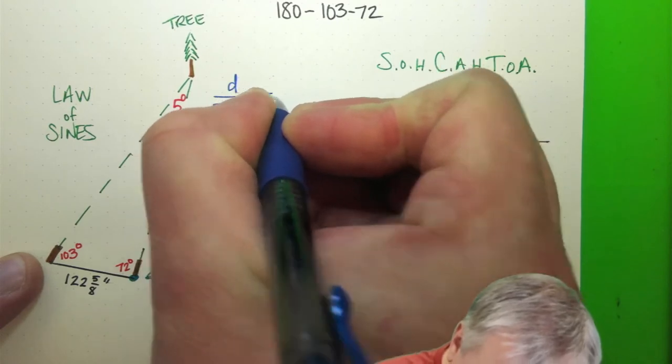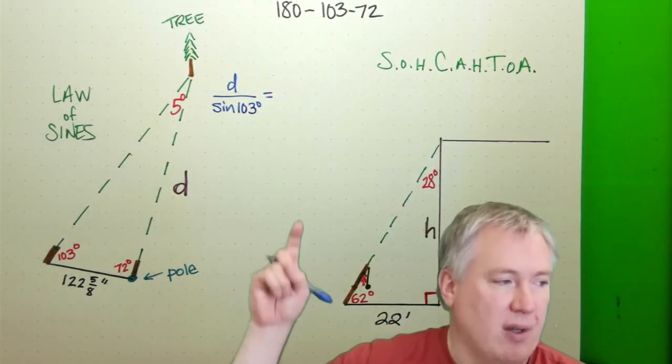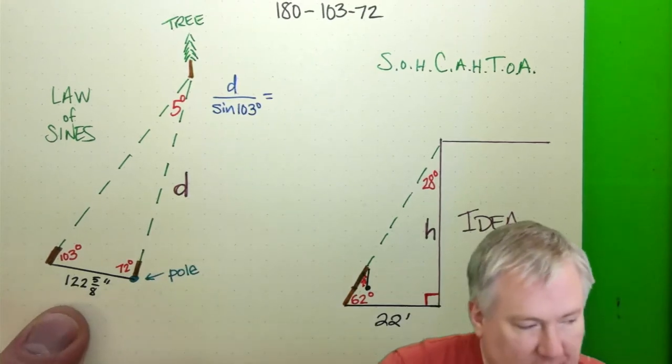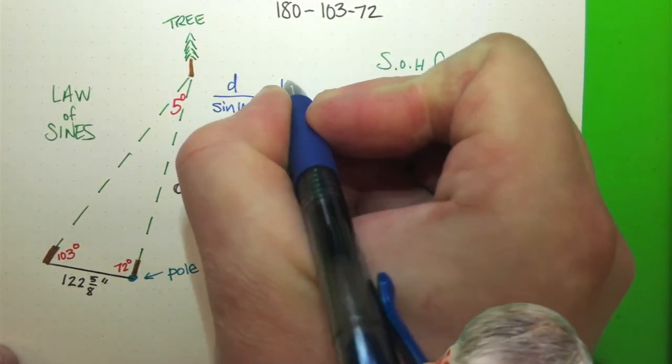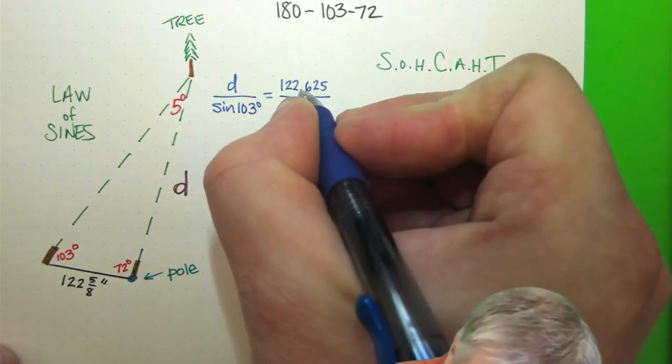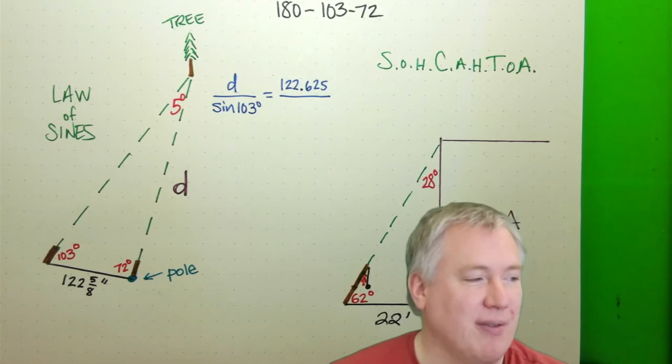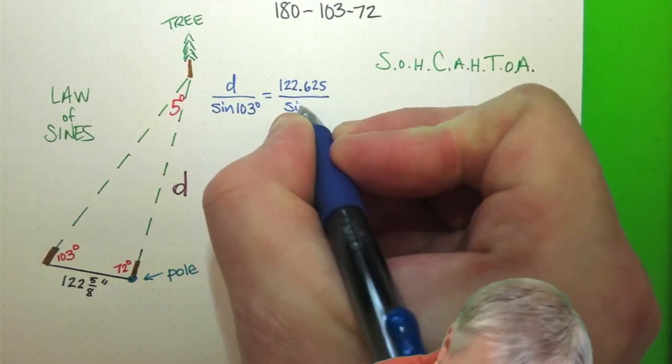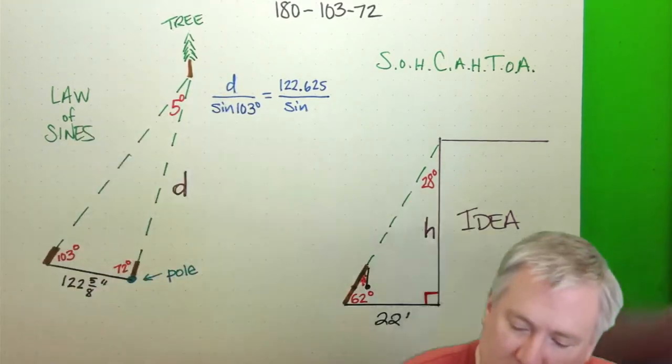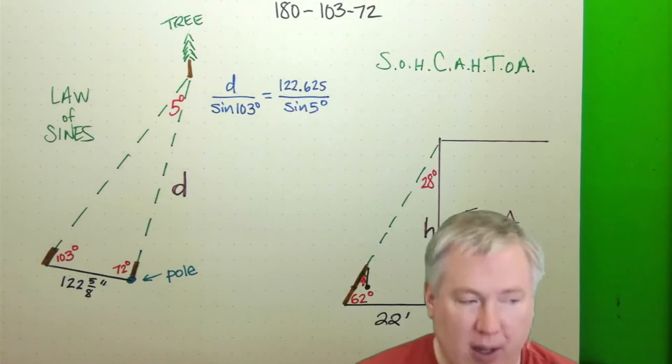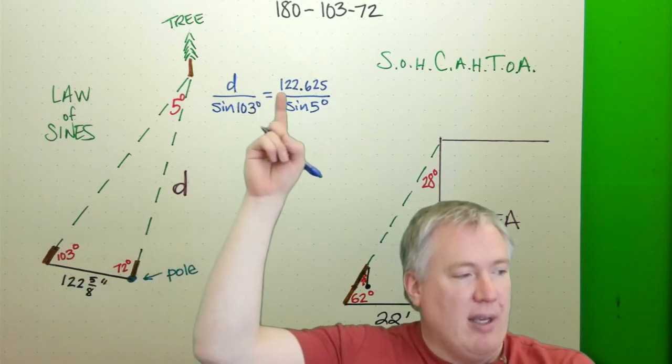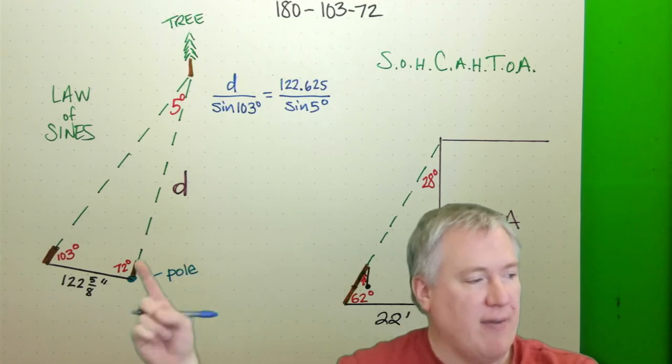So D over the sine of 103. The thing I want to know, divided by the sine of the angle on the other side. And then I take the thing I do know, which in this case is 122 and 5 eighths, which I'm going to write as a decimal. Don't worry if you don't know what the decimal is off the top of your head. You can use a calculator there. But it's 122.625 is 5 eighths. And then divided by the sine of the angle across from it. So as I look at this piece, at the end of this two pieces are these angles. So the angle across from it is that other one, which is 5 degrees. So that's the law of sines. The thing I don't know divided by the sine of the angle across from it equals the length I did measure divided by the sine of the angle across from it.